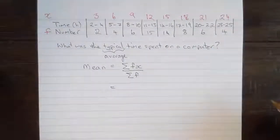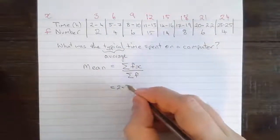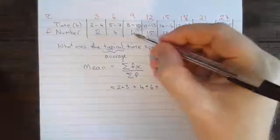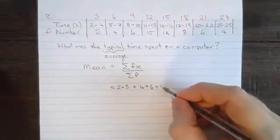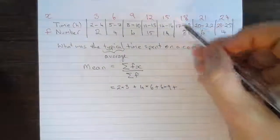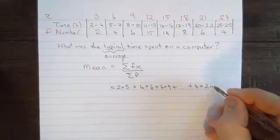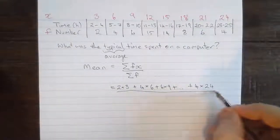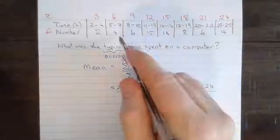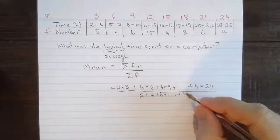So the sum of the F's times X's will be equal to the sum of 2 times 3, plus 4 times 6, plus F is 6 and X is 9, 6 times 9, and so on, all the way along, until we come to the final F and X, plus 4 times 24. We need to divide that by the sum of the F's, which is simply 2, plus 4, plus 6, all the way along the line, until we reach the 4 at the end.